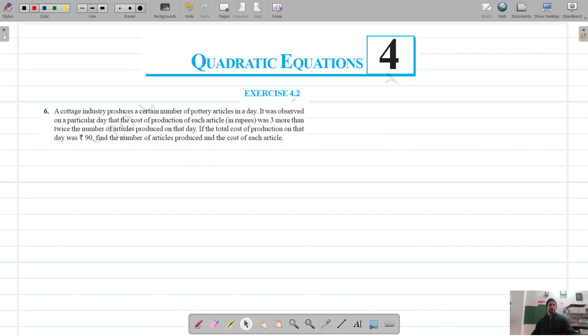Okay, so for the final question of exercise 4.1, it's regarding a cottage industry that produces a certain number of toys, that is articles, in a day. It was observed that on a particular day the cost of production of each article was three more than twice the number of articles produced on that day.